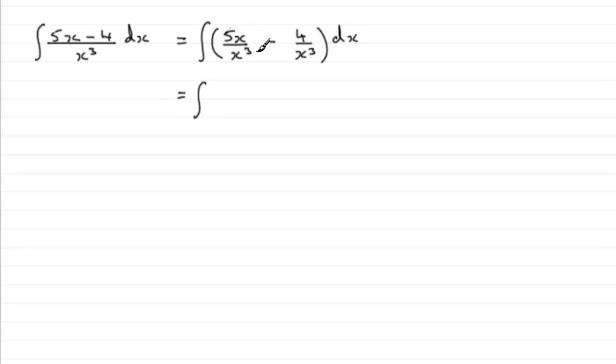For this one, this is 4 times 1 over x³, and we can then bring this x³ up to the top and that would be x^(-3). So you've got minus 4 multiplied by x^(-3), and again put that in brackets and integrate with respect to x.